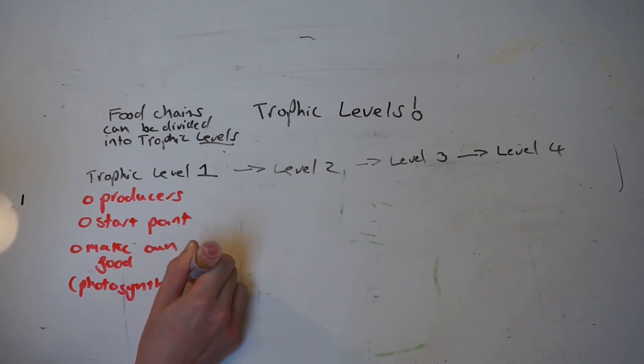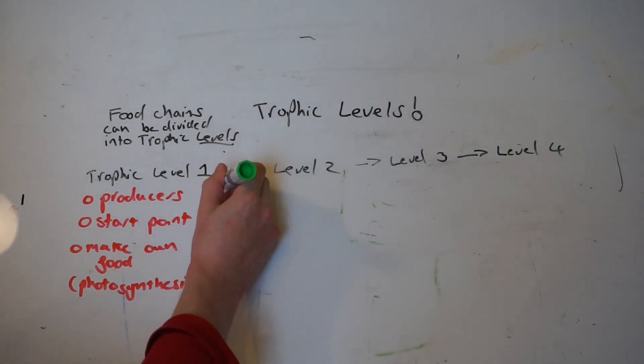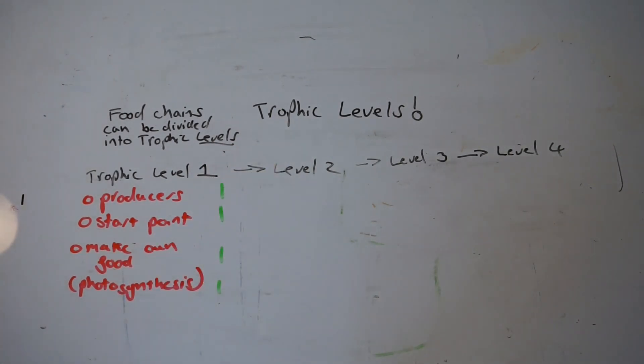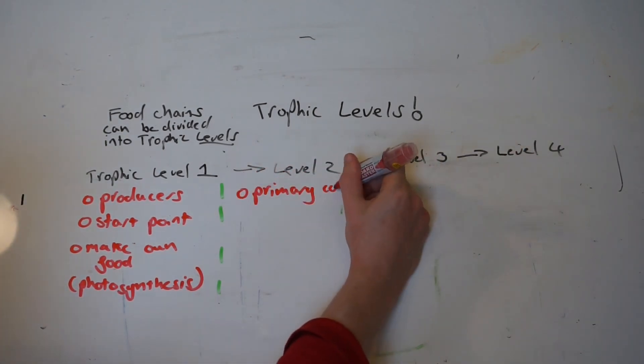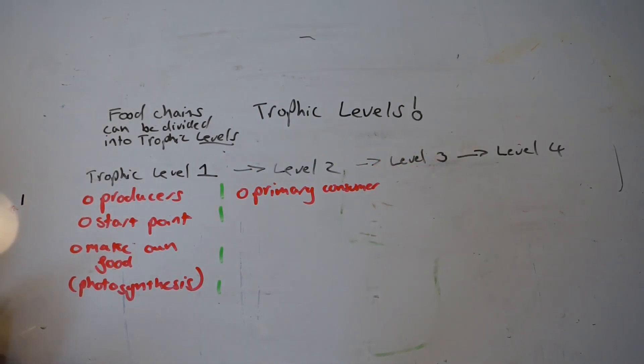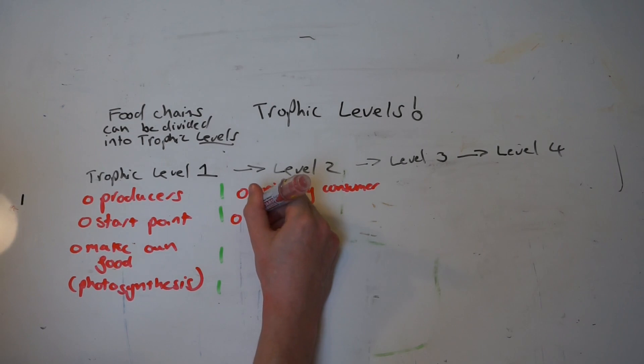After trophic level one, which is the producers, we move on to trophic level two, which are primary consumers. These are herbivores, things that eat the plants and algae. Herbivores only eat plants and algae, so they're only eating the producers.